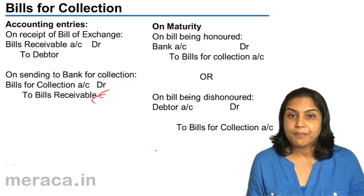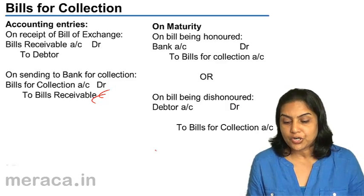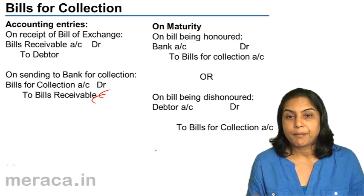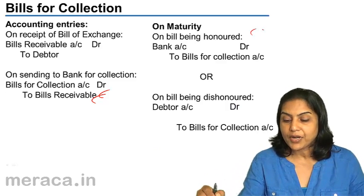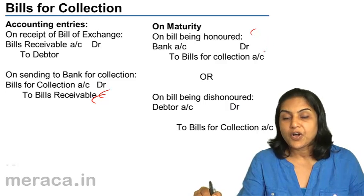When the bill matures, money is put into our bank account. So the entry is bank account debit to bills for collection.